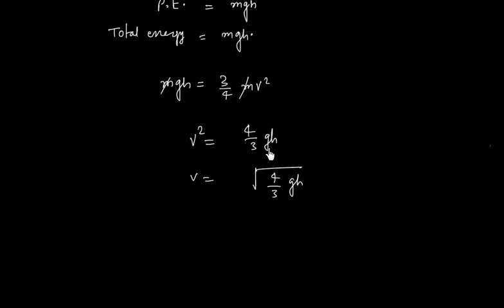If velocity is given then we can find H. So this is the height reached by the disc.